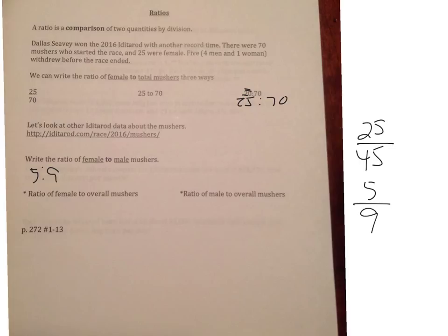Let's do the ratio of female to overall mushers. The key here is you want to look at the word to. And that is like the word T-O that you would see up here or your colon or your fraction bar. And make sure you're keeping the order. So females, there's 25. That came first, so it's going to be written first. And overall we had 70.